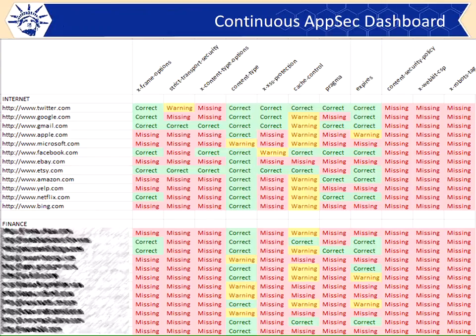I ran it on the top 140 financial sites on the Internet, and they're not doing as well. You can see a marked difference between Internet companies and financials. That's weird to me — forever it was financial organizations leading the way with security. But as far as adopting these new security headers goes, the financial community seems to be lagging behind. I don't understand that, but there's a lot of good things there you should take advantage of.